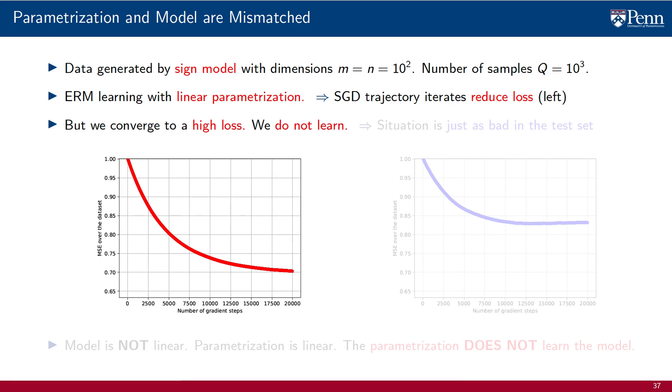However, if we look at the value of the loss to which we are converging, we see that the loss is high. We are converging to an AI that, however optimal, is not that good. We are solving ERM, but we are not learning.